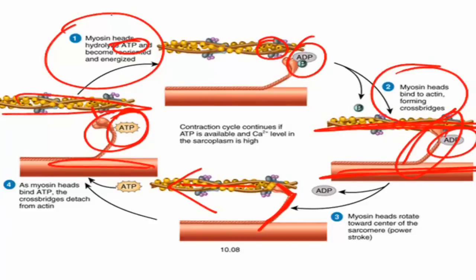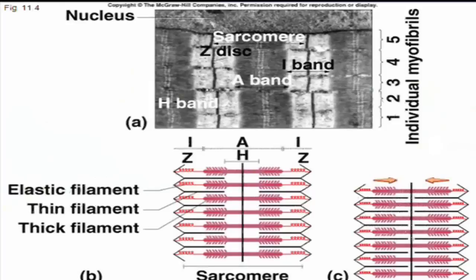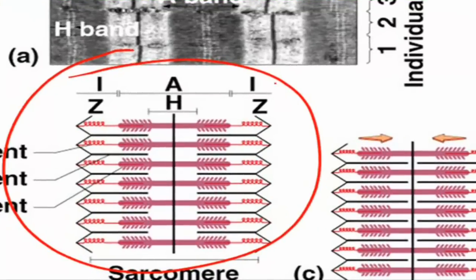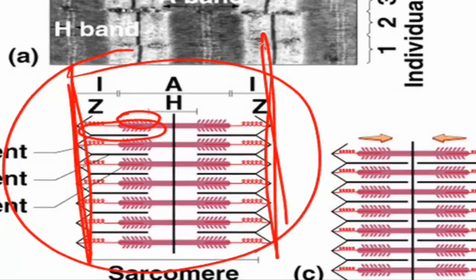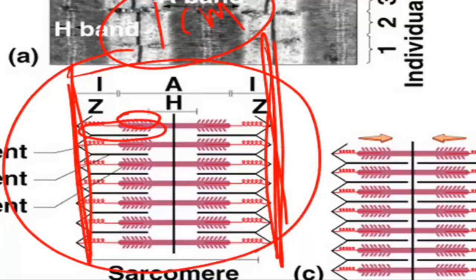What this creates is a sliding of the thick and thin filaments. In a typical sarcomere, there is a degree of overlap between the thick and thin filaments — maybe about 50% overlap. For simplicity, let's say the Z lines of the sarcomere are one centimeter apart — this is a large estimation used just for clarity.